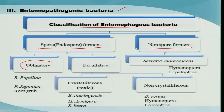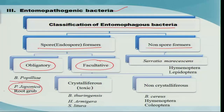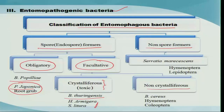Under spore formers, there are obligate and facultative bacteria. Obligate bacteria like Bacillus popilliae are used against Popillia japonica. Under facultative bacteria, there are crystalliferous toxin producers and non-crystalliferous ones. Bacillus thuringiensis falls under crystalliferous toxin producers and is effective against many lepidopterans, coleopterans, and dipteran groups. Under non-crystalliferous, Bacillus cereus is effective against hymenoptera and coleoptera. Under non-spore formers, Serratia marcescens is effective against lepidoptera and hymenoptera.